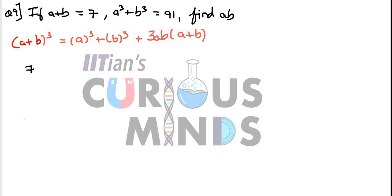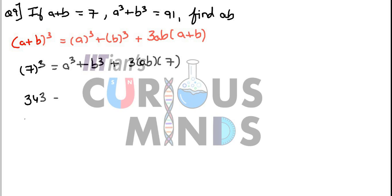As per the formula, 7 cube is equal to a cube plus b cube plus 3ab into 7. Therefore, 343 is equal to 91 plus 21ab, since 7 cube is 343 and a cube plus b cube is 91.